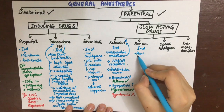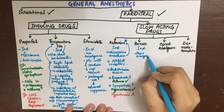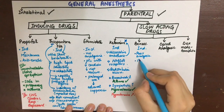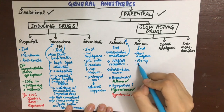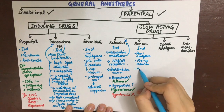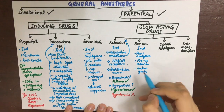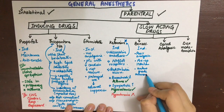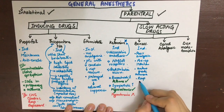Benzodiazepines are used as pre-operative medicine. They cause anterograde amnesia so the patient forgets unpleasant events in the operating theatre. They are also respiratory depressants in high doses. Examples include lorazepam, diazepam, and midazolam. They have poor analgesia.